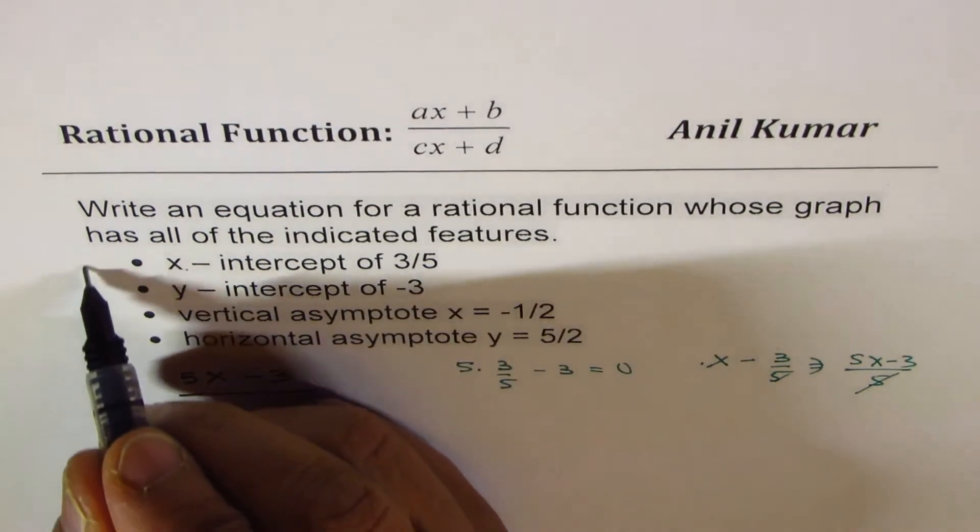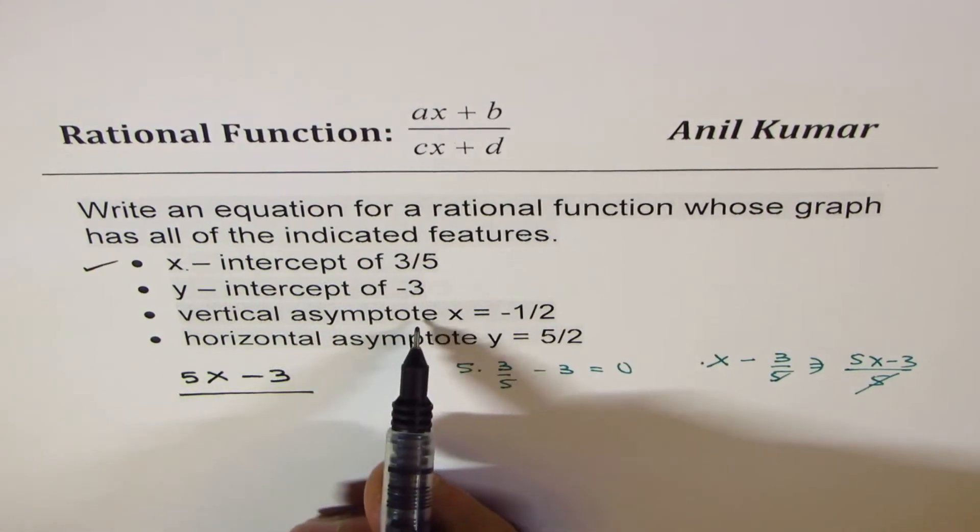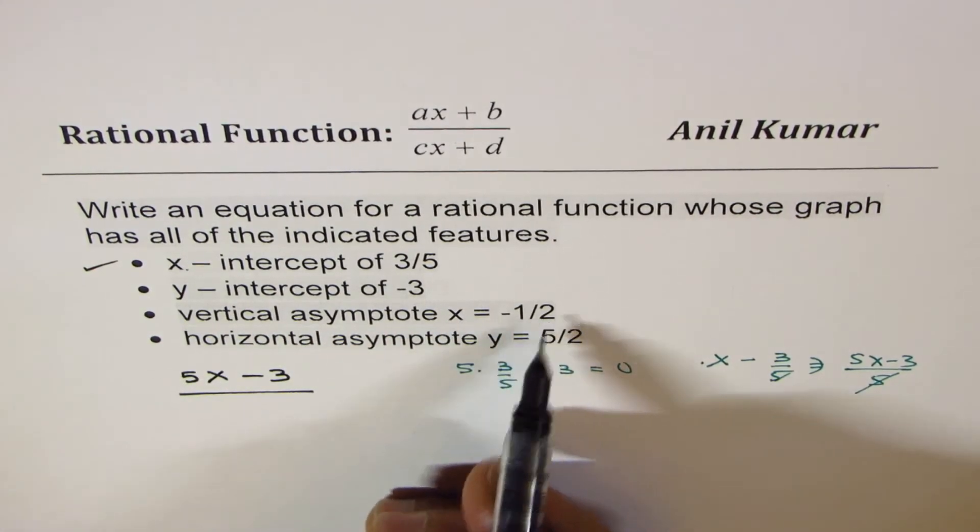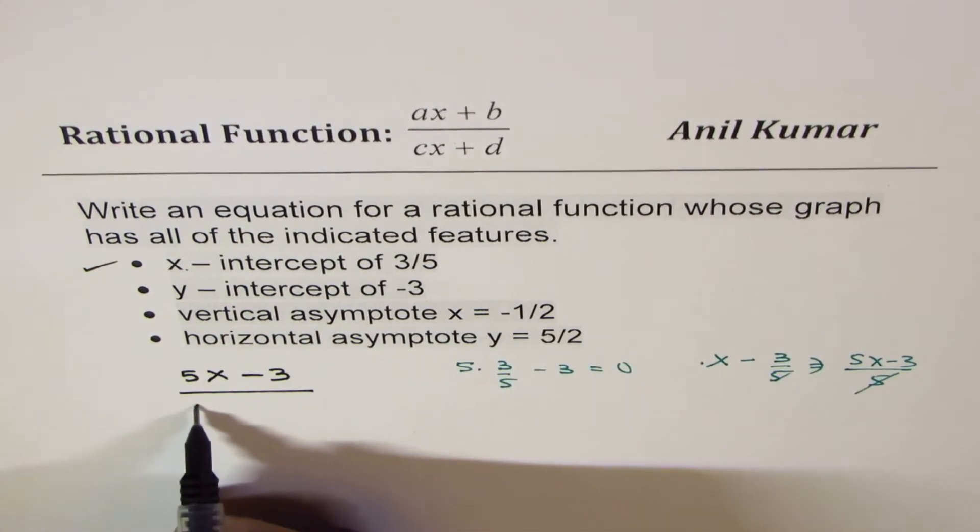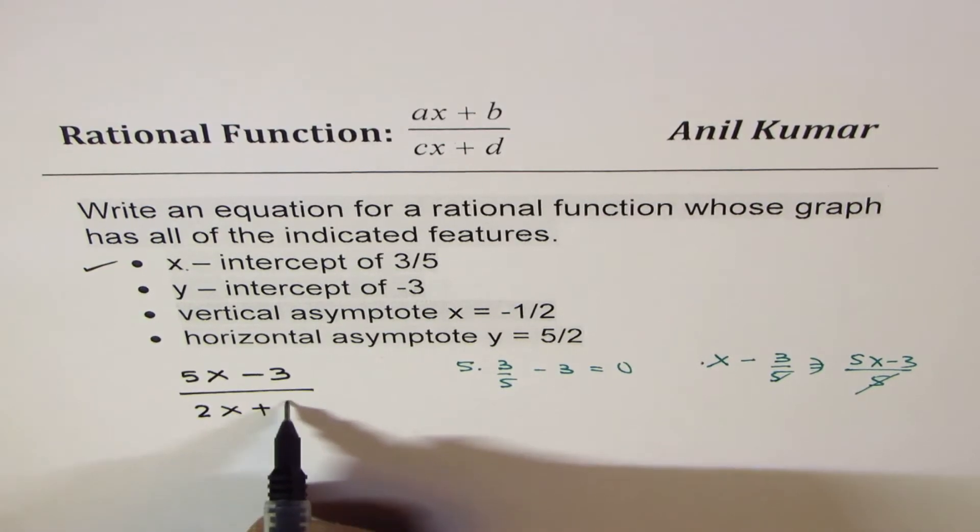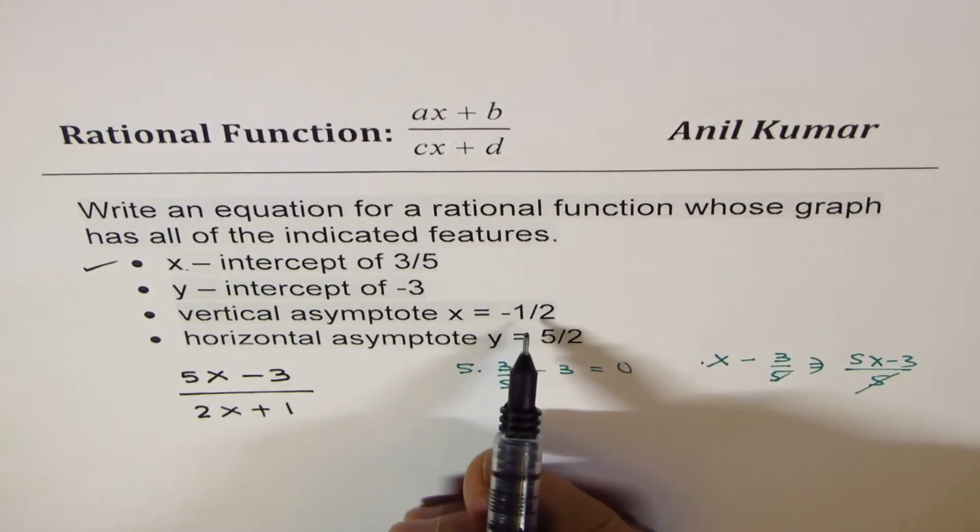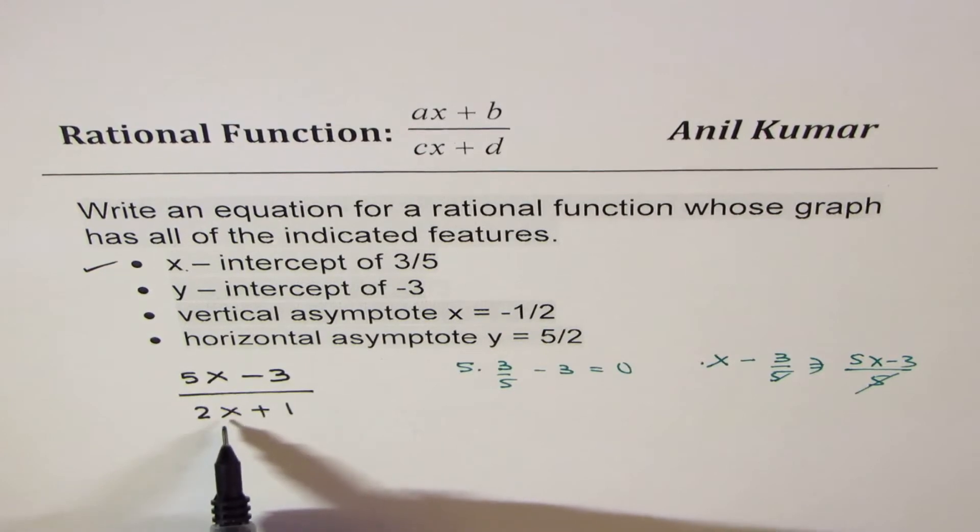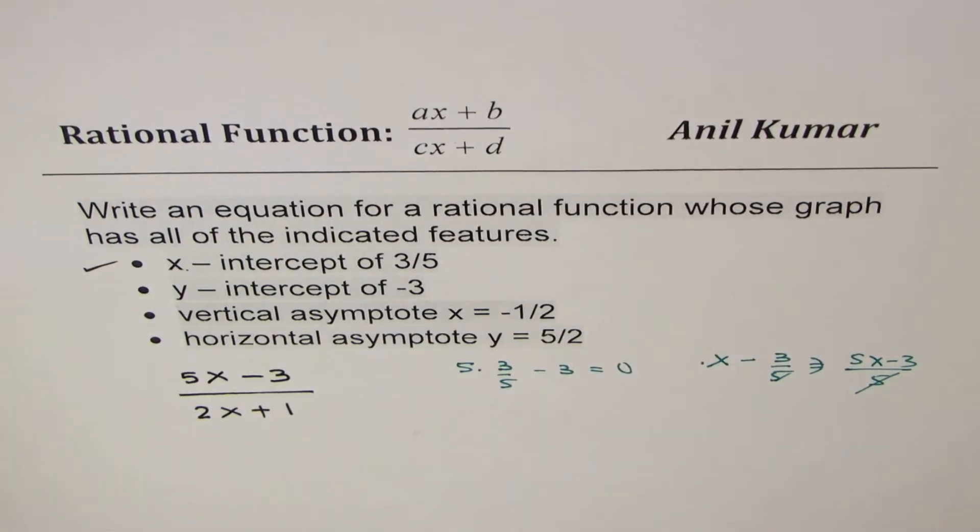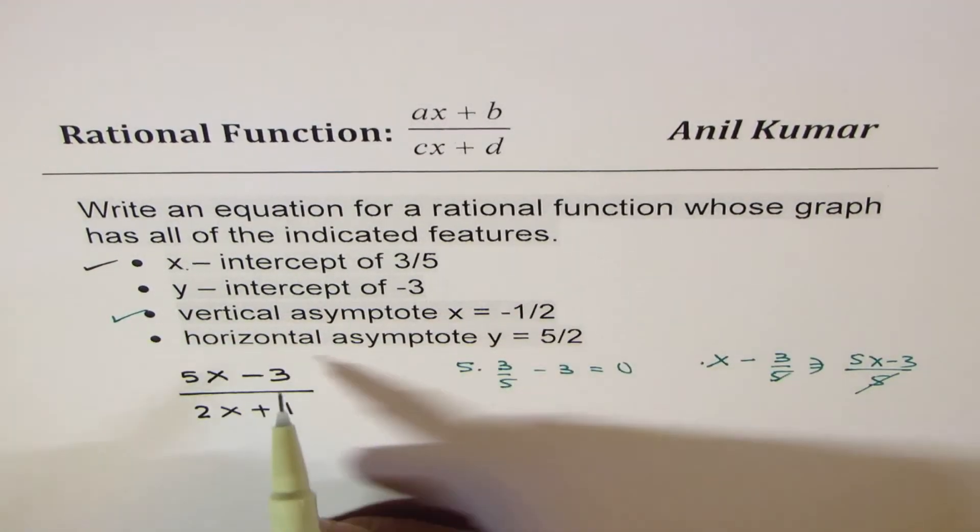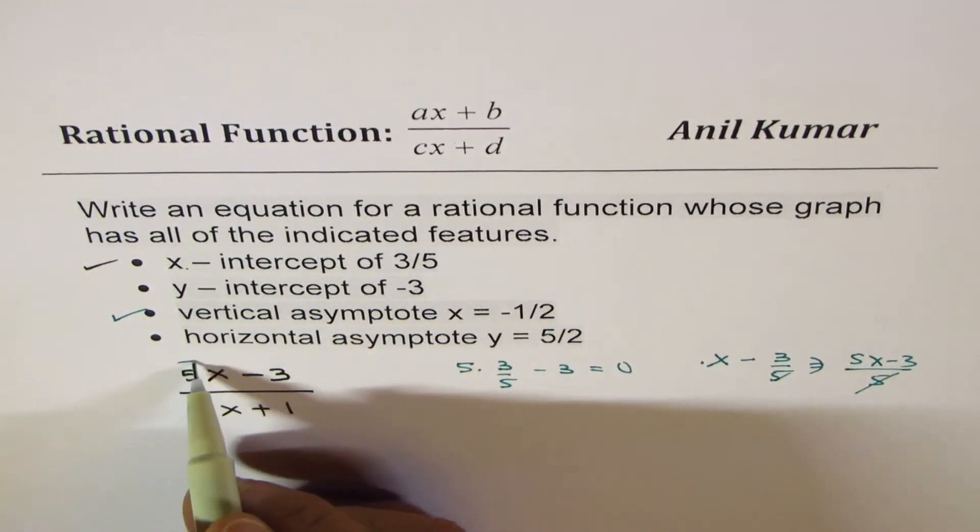Now let's look into the vertical asymptote, which is at minus half. That means denominator should be 2x plus 1. Only then it will be 0 for x equals to minus half. So we have applied this also.